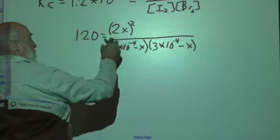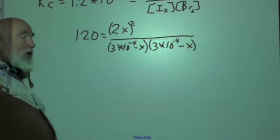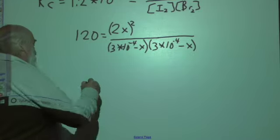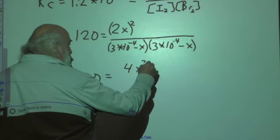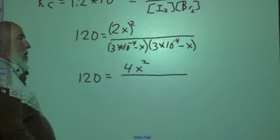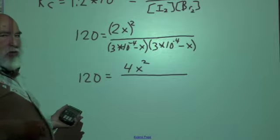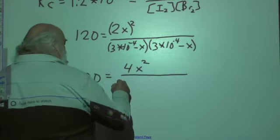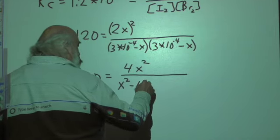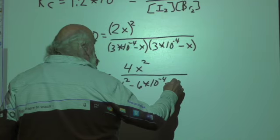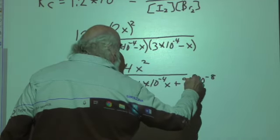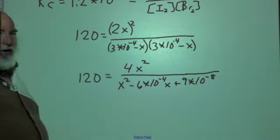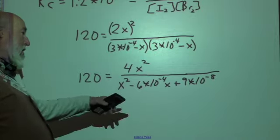It's equal to, and then I'm going to plug in my values here. So this is 2x squared over I2 is 3 times 10^-4 minus x, and Br2 is also 3 times 10^-4 minus x. Even though I can put a square there, it's going to be important for me to write this as two separate binomials so that I can multiply them together using the FOIL method. 2x quantity squared is 4x squared. Here's another mistake that students make. They will square the x, but they will forget the square of the 2. So 120 equals 4x squared on top. Now, we're going to FOIL this out, and then we're going to rearrange this so the x squared is first. When I do that, I get x squared minus 6 times 10^-4 x plus 9 times 10^-8.